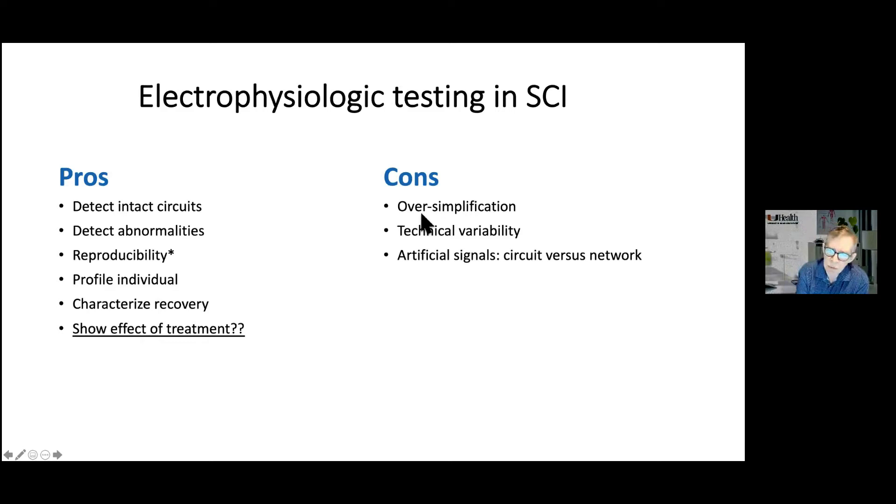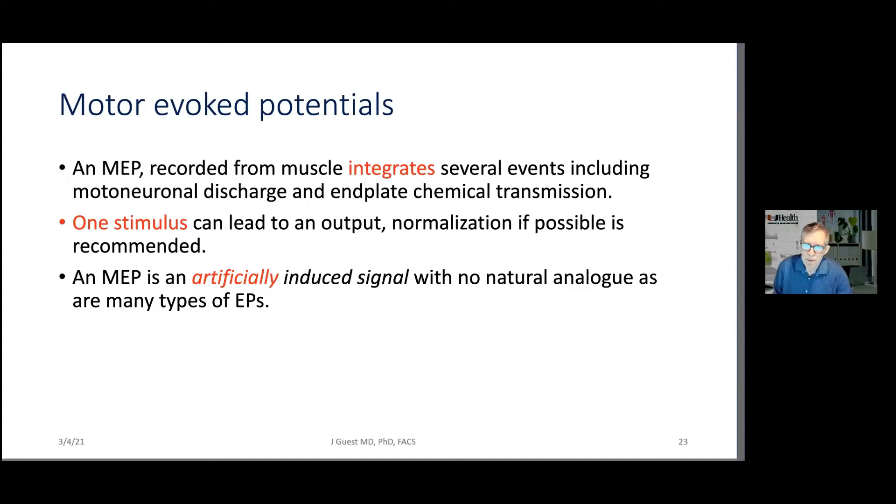The cons, neurophysiology tends to oversimplify what's actually happening in the nervous system. There's a lot of technical variability and the evoked potentials themselves, they're just artificial signals. They're just us putting something into the nervous system and reading it out somewhere and taking advantage of the fact that there's a connection. So it isn't really telling us about normal function. And the other thing is that the evoked potential tells us about a circuit. It really doesn't tell us much about the network of connectivity.